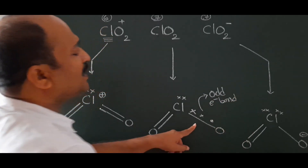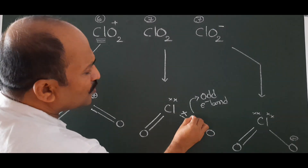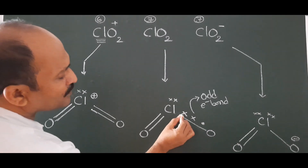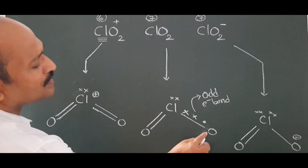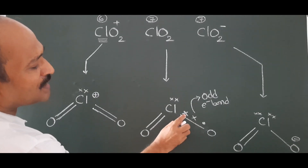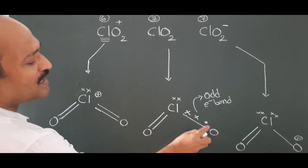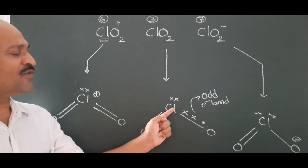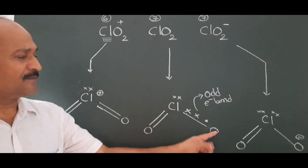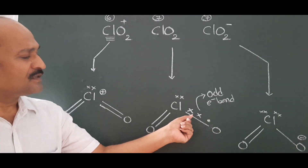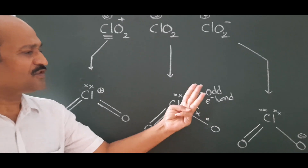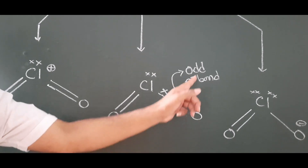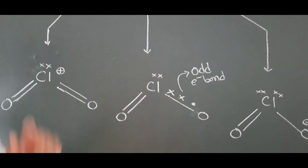In ClO₂, the odd electron bond has two electrons coming from chlorine and one electron coming from oxygen. Generally, a bond is formed by sharing one electron from each atom, but here a special bond is formed by sharing three electrons — two from chlorine and one from oxygen. That is the odd electron bond.